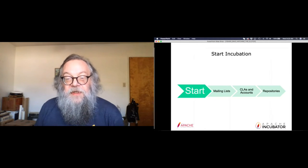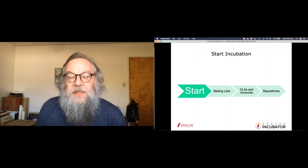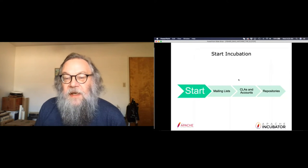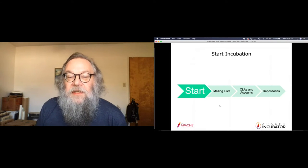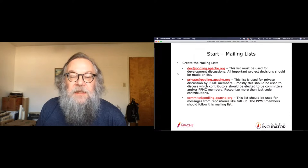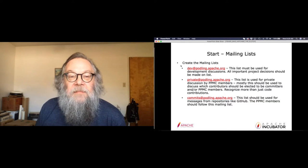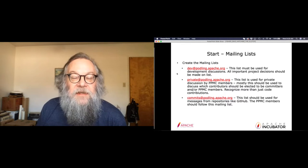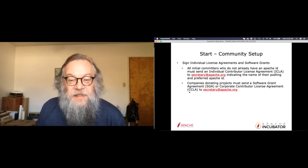There are a few important items to establish when starting incubation. The important things are: establishing the mailing lists, setting up contributor license agreements, and transferring repositories so that you can move ahead with the coding. Typically there's a development list — this is where development discussions need to be, where important decisions should be made or memorialized, and where people introduce themselves saying they're interested in the project. There's also a private list.